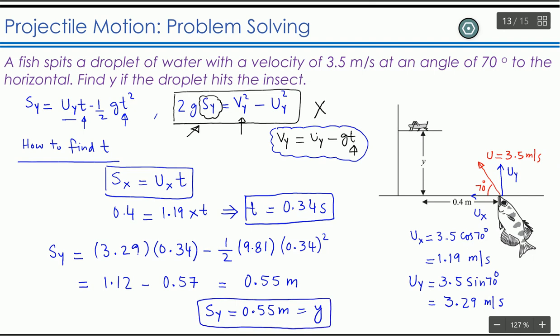So sy = 0.55 meters, which is the vertical distance asked for in this problem. You can see how the equations of motion are used in two dimensions — in the x direction and y direction at the same time. In some problems you are not directly asked to use one equation; you have to find intermediate values first. In this question, time t was not asked explicitly, but you needed it, so you used the horizontal equation to find t and then used it to find the required vertical distance.